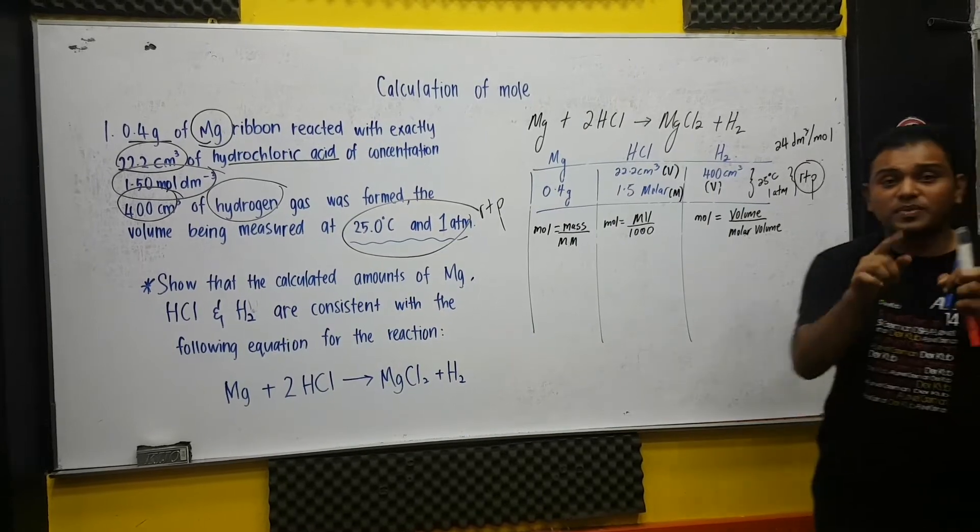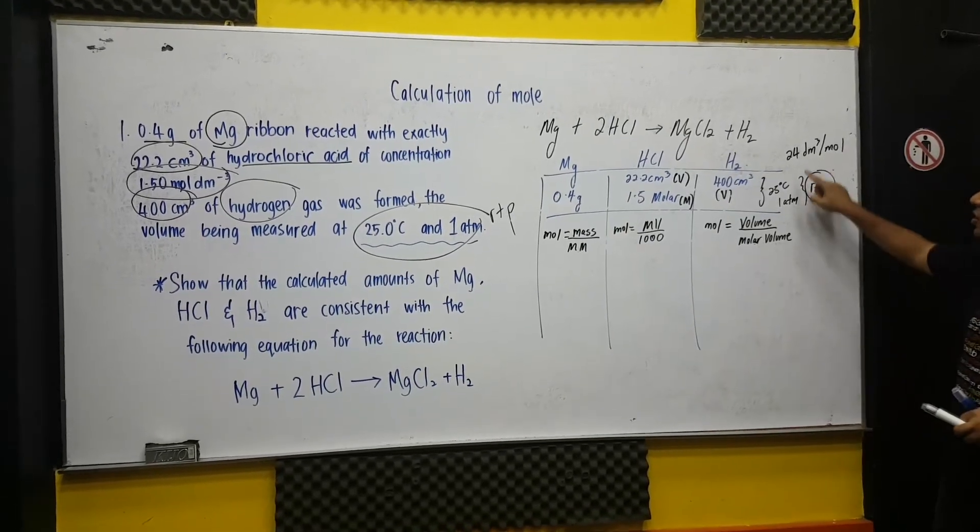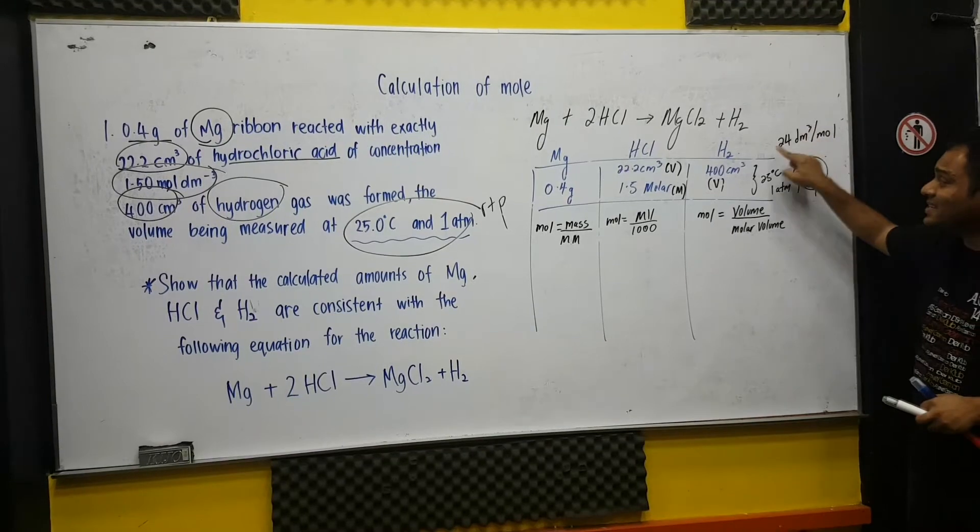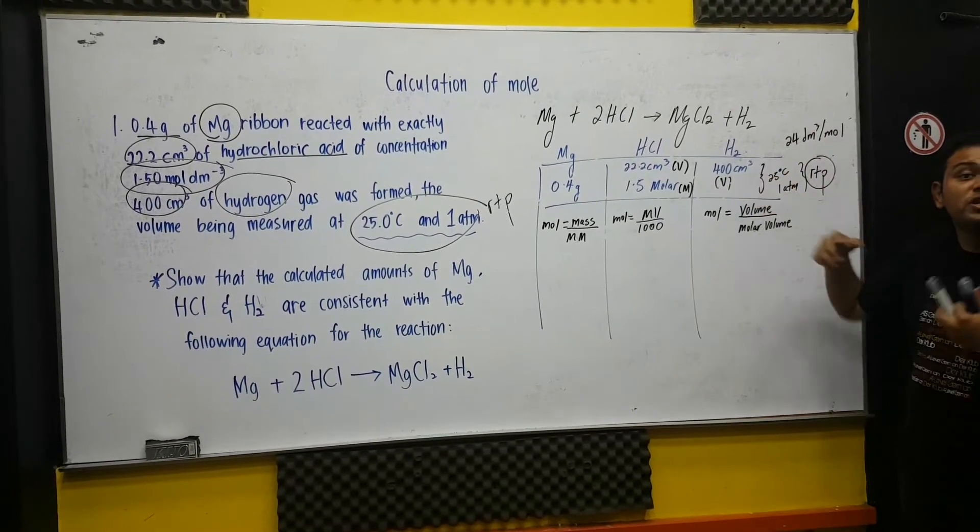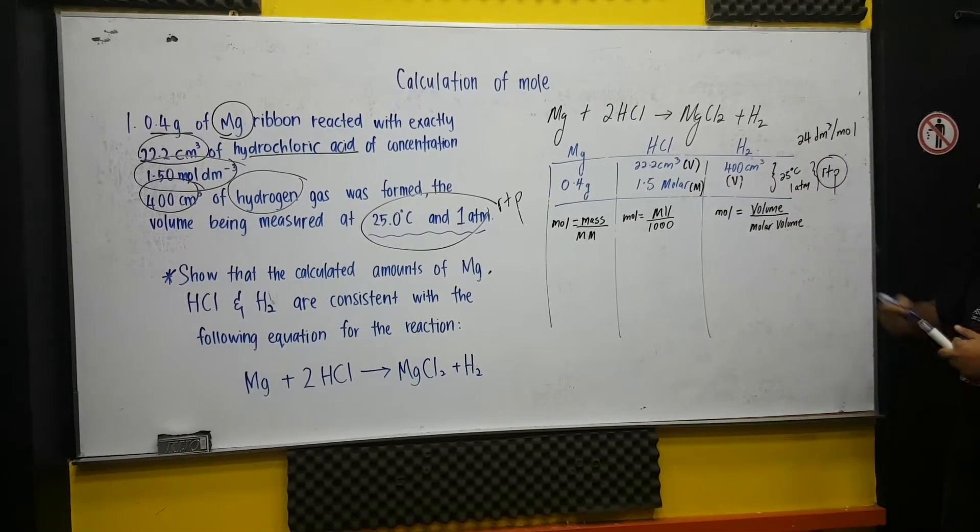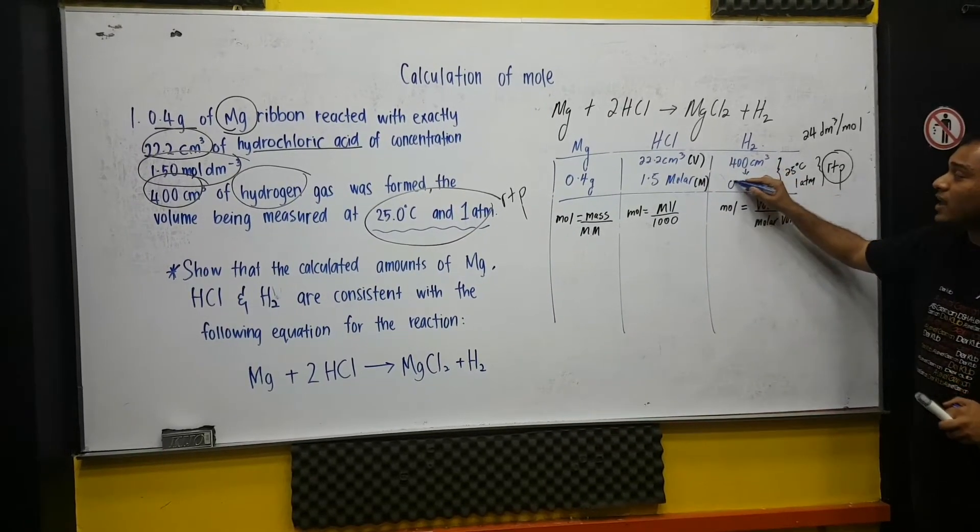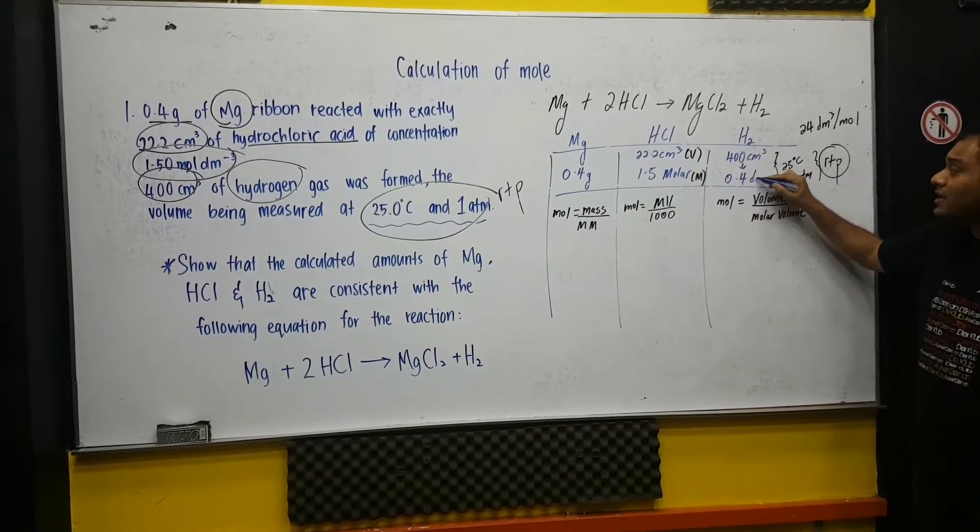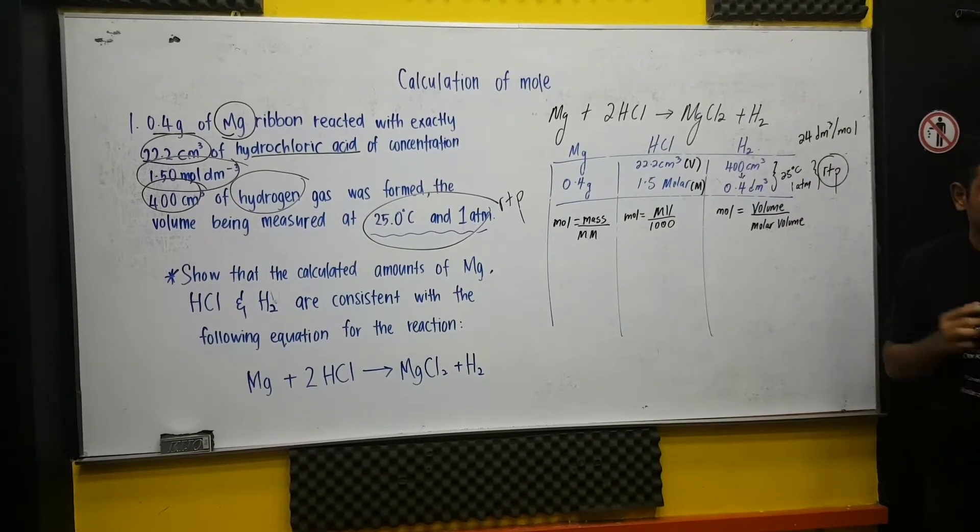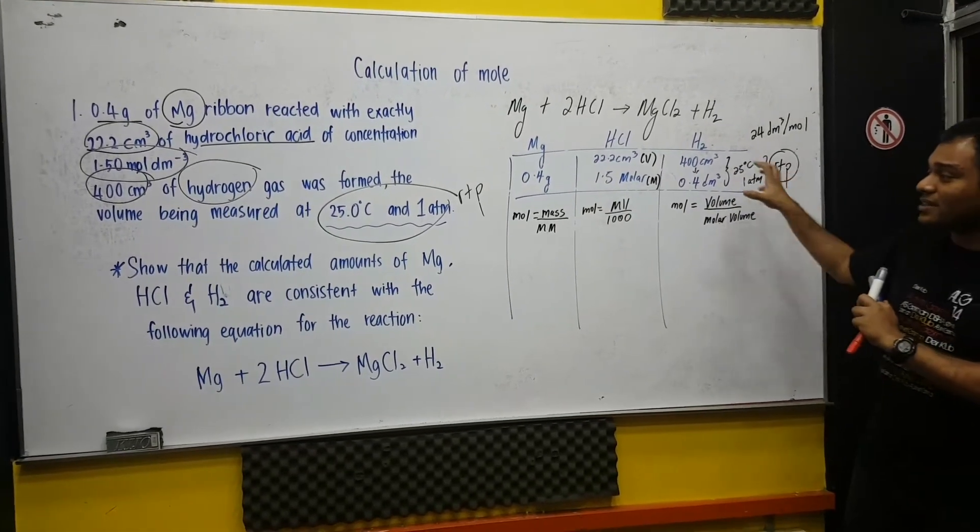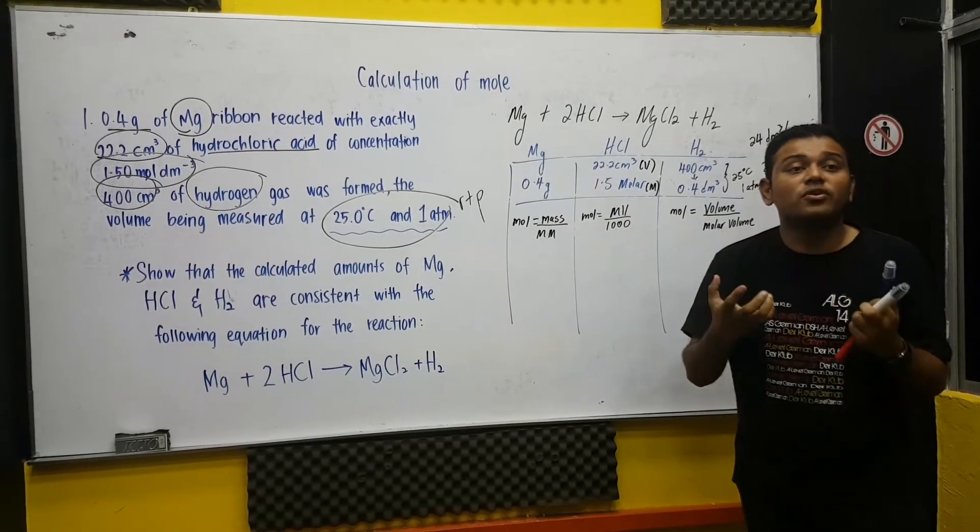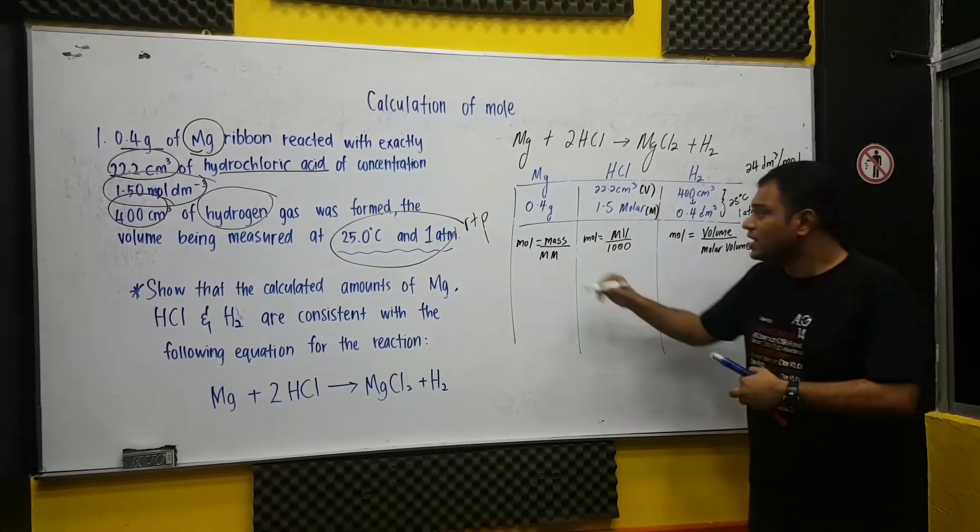Therefore, there is one thing you need to be careful. The information is 24 dm³. And since here is cm³, you need to change it into dm³. But subdivide it by 1000 and you get 0.4 dm³. So we already gathered those informations.